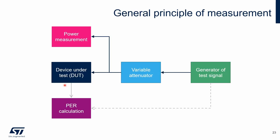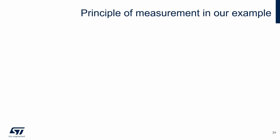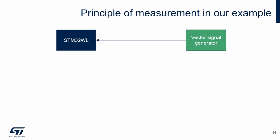Here is the general principle of measurement. The tested device is connected through a variable attenuator to the generator of the test signal. The attenuator may also be included inside the generator. The level of received power is measured by a power meter. Based on the number of successfully received packets, the packet error rate is calculated. The test signal is attenuated until the packet error rate threshold is exceeded. In our example, we will manually measure receiver sensitivity step by step to illustrate the principle.